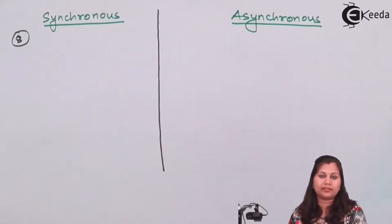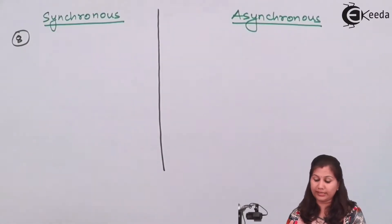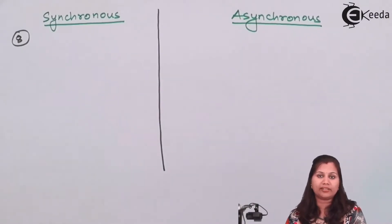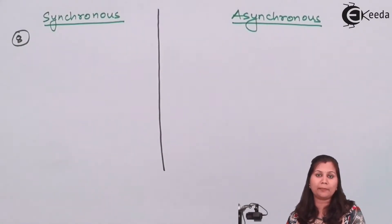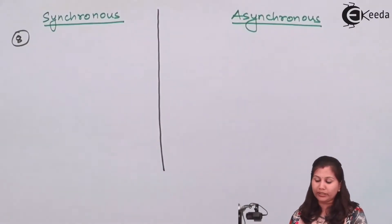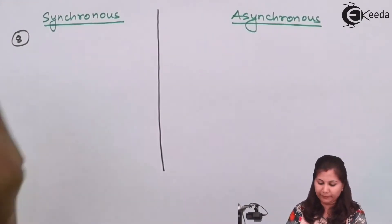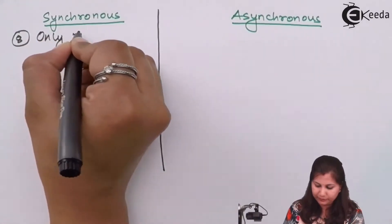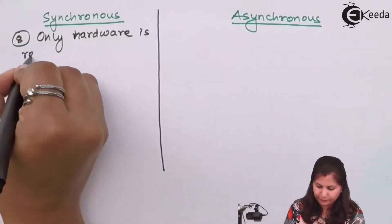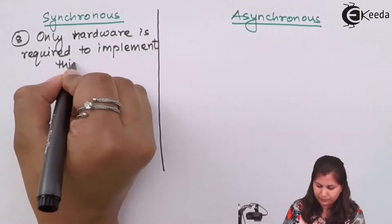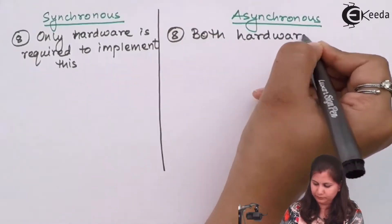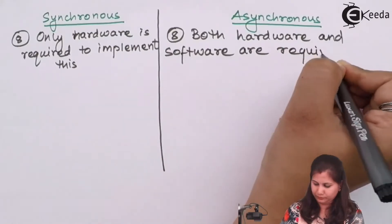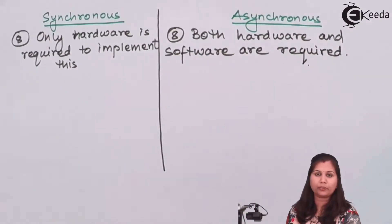In synchronous, more hardware is required, whereas in asynchronous less hardware is required. Also, in synchronous only hardware is required — no software part is needed — because we need only the clock signal and the data bits. Whereas in asynchronous we require both hardware and software, because we have to add the start and stop bits and also generate a parity bit. So in asynchronous, the software part is also required, whereas in synchronous only hardware is required.